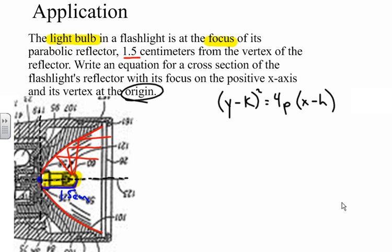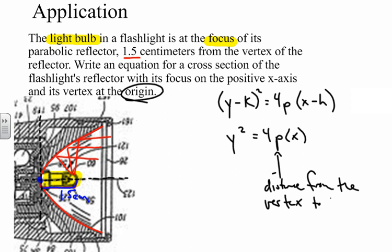Now we need to find p. p is the distance from the vertex to the focus. Since the distance from the vertex to the focus is 1.5 centimeters, p equals 1.5 centimeters.